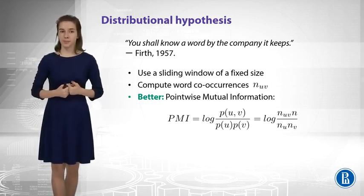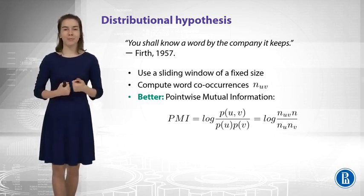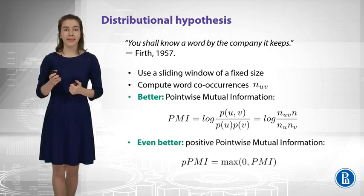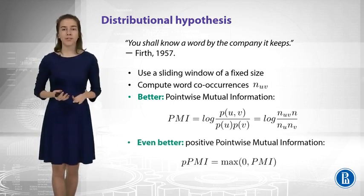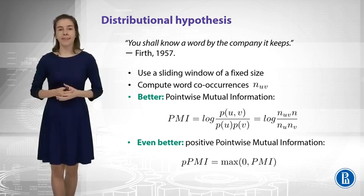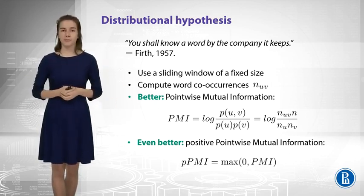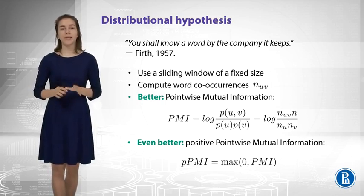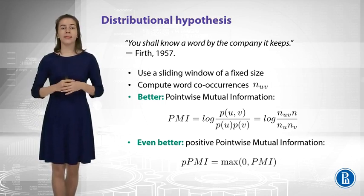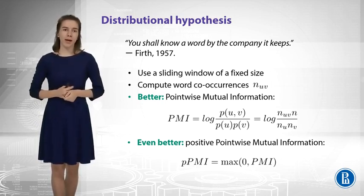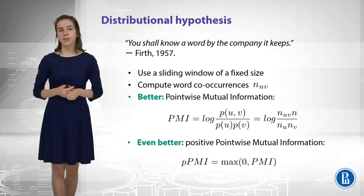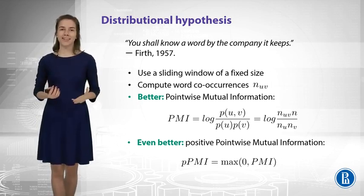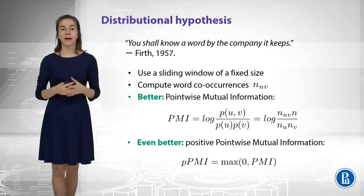Do you see any more problems with this measure? There are some. When you see counts with a logarithm applied to them, you should expect zeros somewhere. Indeed, you can have words that never co-occur together, or that co-occur very rarely, giving very low numbers inside the logarithm. A good idea is to take the maximum of PMI and zero. This way, we get rid of those minus-infinity values and obtain nice positive point-wise mutual information, or PPMI. This is the measure that is usually used. The idea underlying all these measures is the distributional hypothesis: you can know the word by the company it keeps, so the meaning of a word is defined by its context.